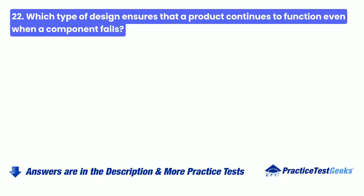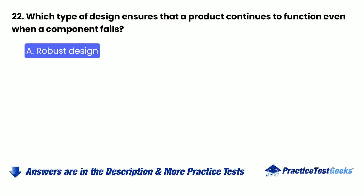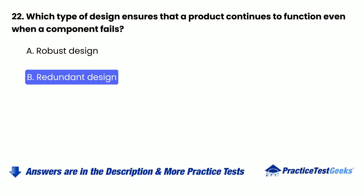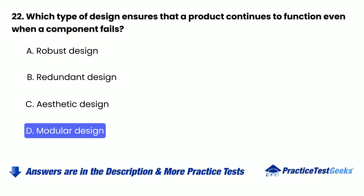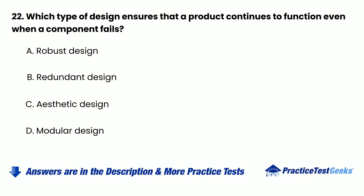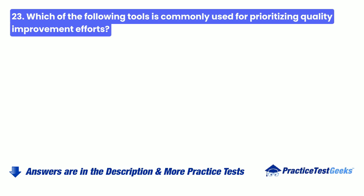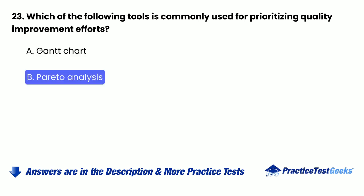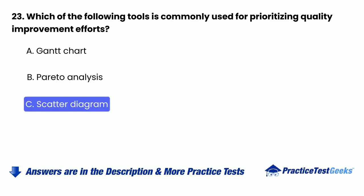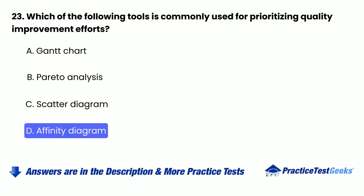22. Which type of design ensures that a product continues to function even when a component fails? a. Robust design. 23. Which of the following tools is commonly used for prioritizing quality improvement efforts? a. Gantt chart. b. Pareto analysis. c. Scatter diagram. d. Affinity diagram.